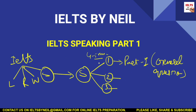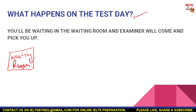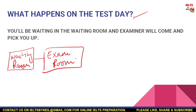Let's see how to attempt speaking part one and what things we have to be careful of. On the test day, when you go to the venue you will be sent to a waiting room until your turn comes. This will be your main examination room. An examiner will come to you, say your name, and take you back to the examination room, and from then your speaking exam starts.